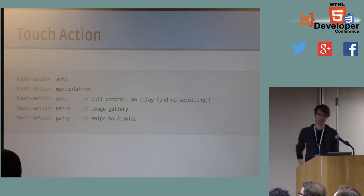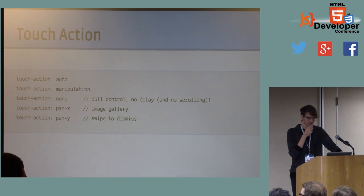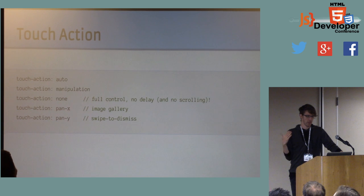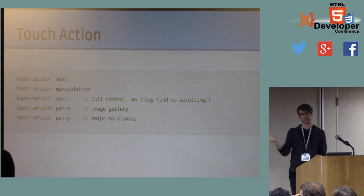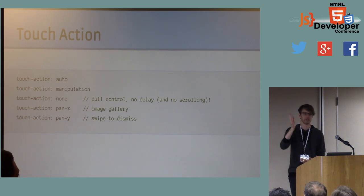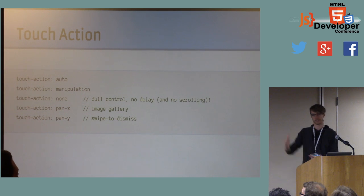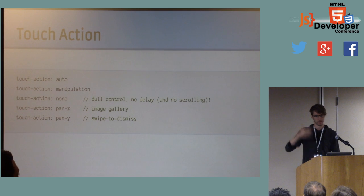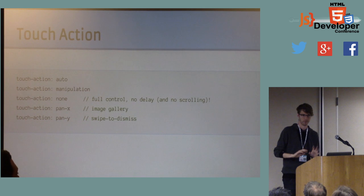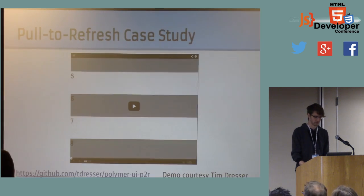Some imagined use cases: for 'none', it's when you don't want scrolling but you do want full control. pan-x would be good for, like, an image gallery that was the size of the viewport and went horizontally, but you want to be able to flick things upwards. pan-y would be great for a swipe-to-dismiss in a list — you want to let the browser scroll normally in the vertical direction, but in the horizontal direction you want to do your custom swipe-to-dismiss thing. This works really nicely.